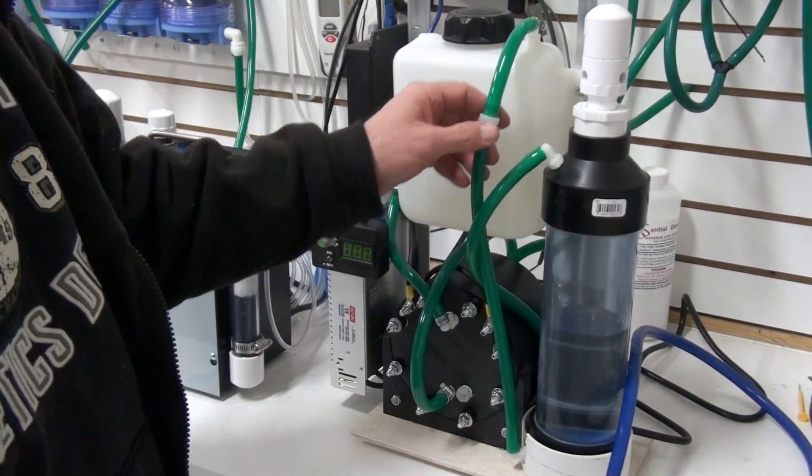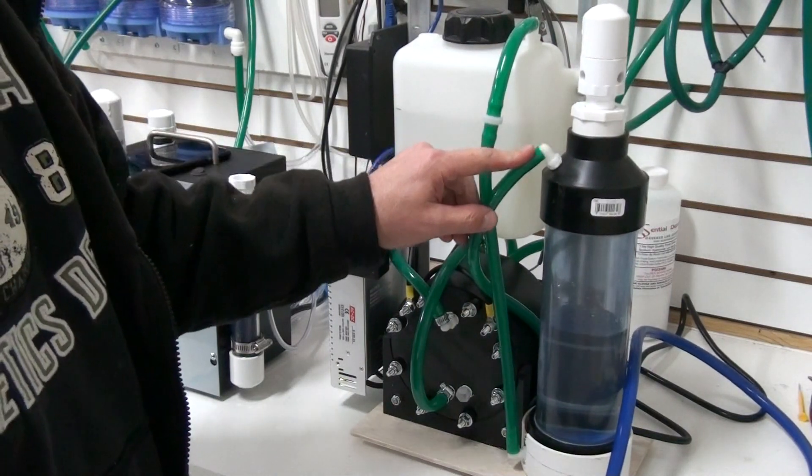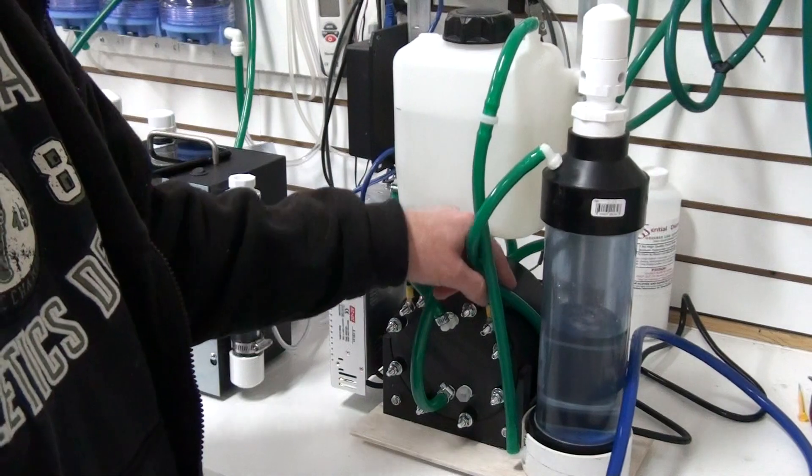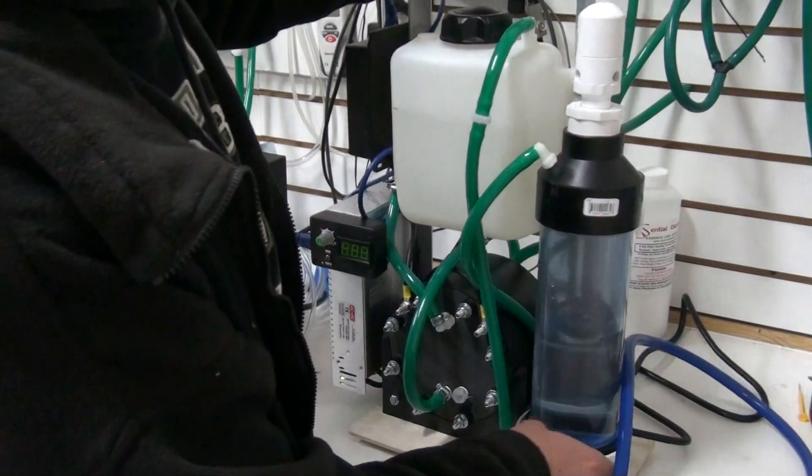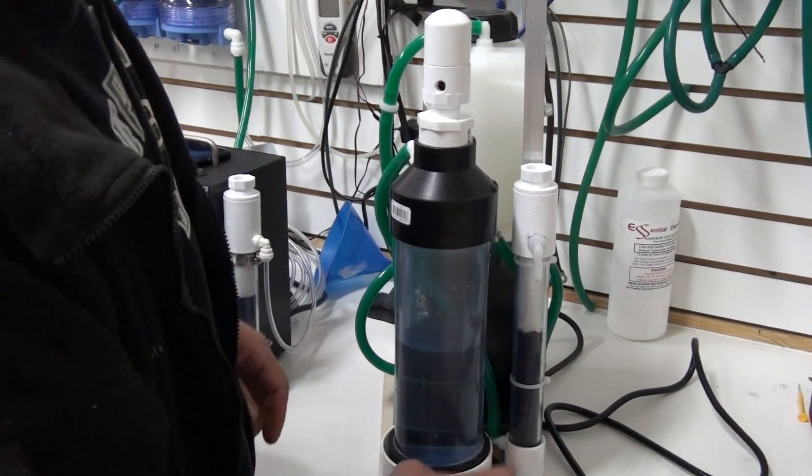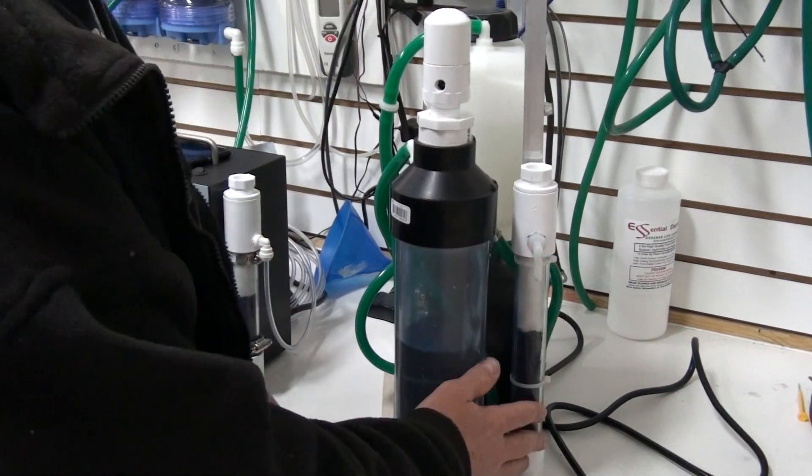Right here you've got your output hose that comes off of your bubbler. This goes down to the filter in the back, right down there into that filter. What you want to do is bypass this filter.